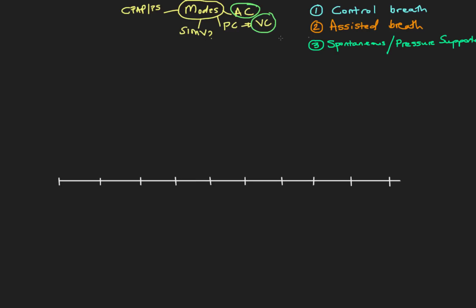In this video we're going to look at assist control using the example of volume control — how assist control operates as a mode of ventilation. When we look at how a ventilator interacts with a patient we need to look at two things: what is the control scheme — what level of control is the ventilator taking over the patient — and how are the breaths delivered. So let's write out assist control AC/VC — volume control AC/VC.